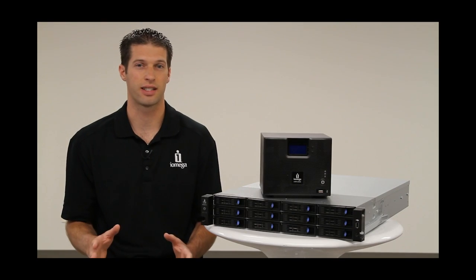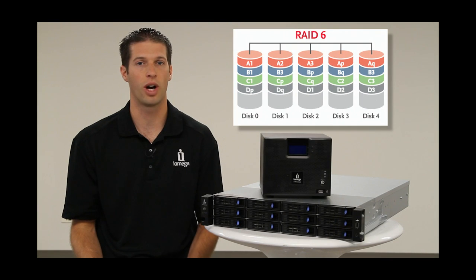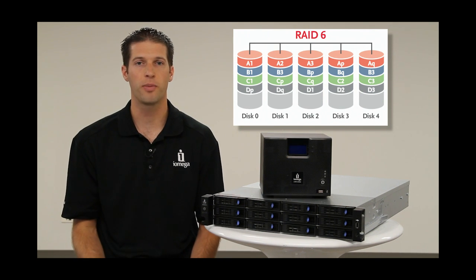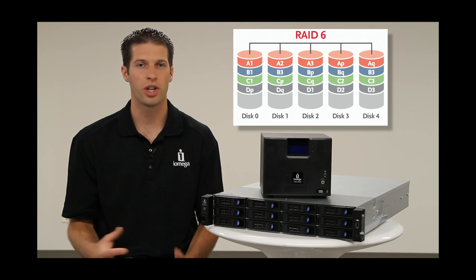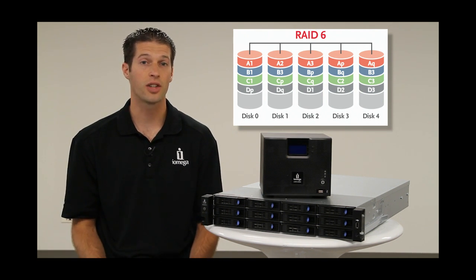Next, RAID 6. Just like RAID 5, data is written across all the drives along with parity information, but has double the parity such that your data can be retrieved if two drives fail. A RAID 6 storage device requires a minimum of four drives. The usable capacity will generally be the physical capacity less two drives.